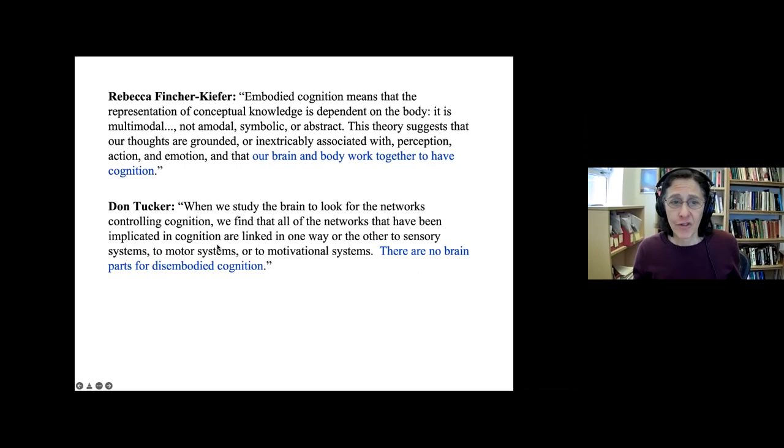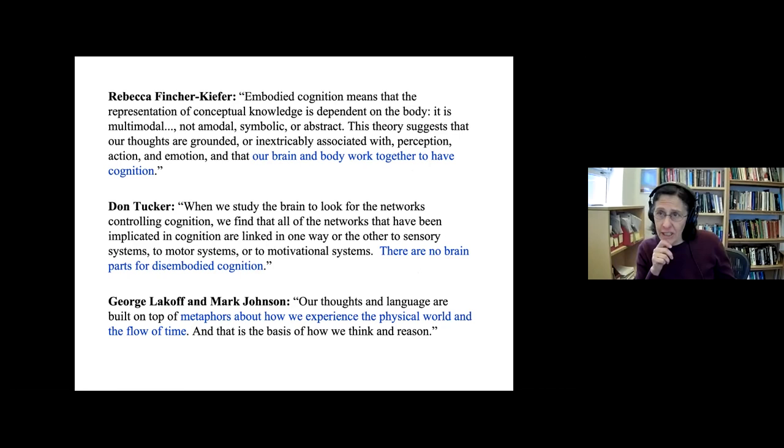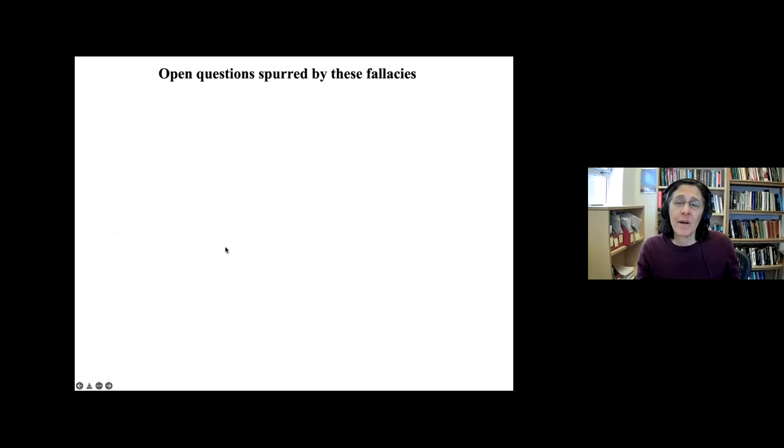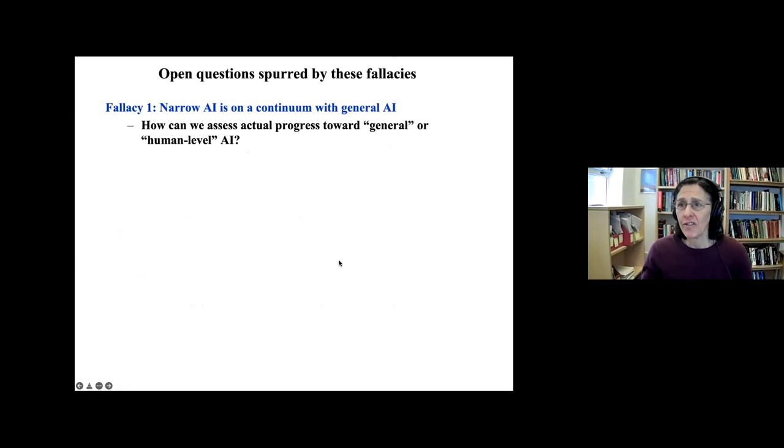But of course, many cognitive scientists have hypothesized that the brain is not the only or even the sufficient equipment needed for cognition, that the brain and the body actually work together. This is called the embodied cognition hypothesis. John Tucker, a neuroscientist, notes that there's no brain parts for disembodied cognition. All of the networks in the brain that are implemented in cognition are linked to sensory systems, to motor systems, or other motivational systems. And Lakoff and Johnson have famously shown in depth how we understand language. And in fact, all of our thoughts are based on our experiences of the physical world and the flow of time. And this is shown in the metaphors that we make in our language.